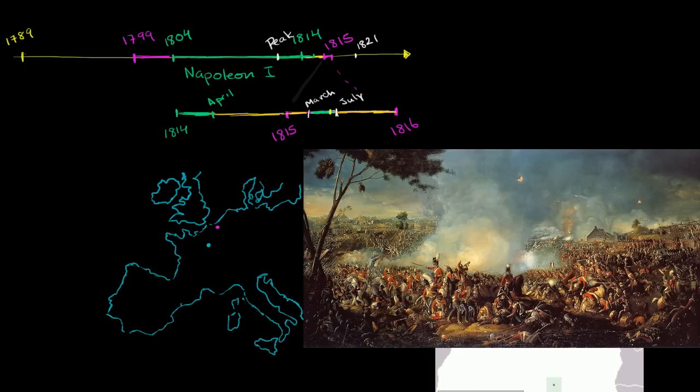So let's review how we got to where we are right now. In 1789, you have the revolution in France. This makes the French very proud, a lot of nationalistic pride. It also makes the rest of Europe a little worried.